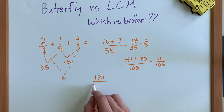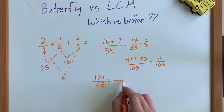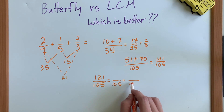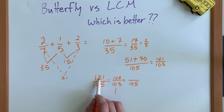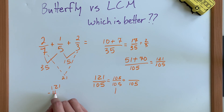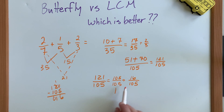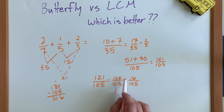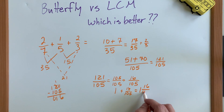Doing the butterfly method again with seventeen over thirty-five and two over three: seventeen times three is fifty-one, plus two times thirty-five is seventy, and the denominator is thirty-five times three which is one hundred and five. Adding the numerators: fifty-one plus seventy is one hundred and twenty-one over one hundred and five. To write it as a mixed number, pull out one hundred and five to make one, and sixteen plus one hundred and five is one hundred and twenty-one. So the final answer is one and sixteen one-hundred-and-fifths.